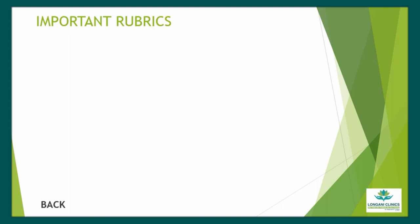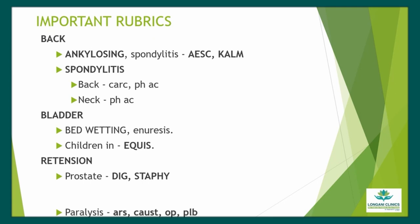Back chapter: Ankylosing Spondylitis — drugs are Aesculus and Kalmia. Back Spondylitis — drugs are Carcinocin and Phosphoric Acid. Neck Spondylitis — drug is Phosphoric Acid. Bladder chapter: Bed Wetting / Enuresis in Children — drug is Equisetum. Retention of Urine due to Prostate — drugs are Digitalis and Staphysagria. Retention of Urine due to Paralysis of Bladder — drugs are Arsenic, Causticum, Opium, and Plumbum.